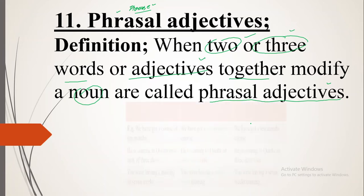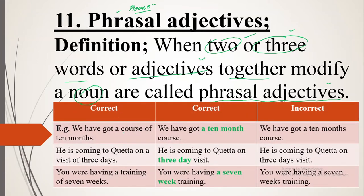Here is a simple sentence: 'We have got a course of ten months' — that is correct. Now as a phrasal adjective: 'a ten month course.' Here, 'a' is an article, 'ten' is an adjective, 'month' is a noun — these three words together add something to the meaning of the noun 'course,' so they are known as a phrasal adjective.